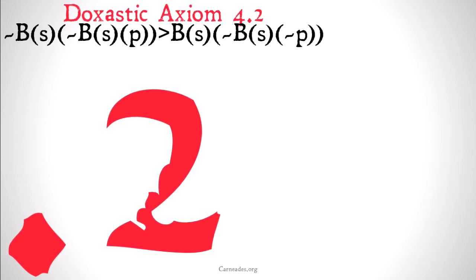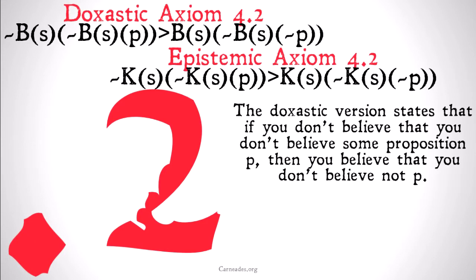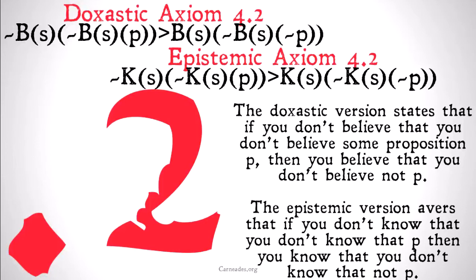A little bit confusing, but we're going to try to explain it. The doxastic version states that if you don't believe that you don't believe some proposition, then you believe that you don't believe not P, or the denial of that proposition. The epistemic version is that if you don't know that you don't know that P, then you know that you don't know that not P.